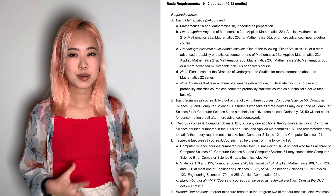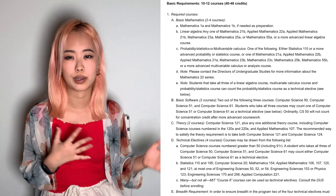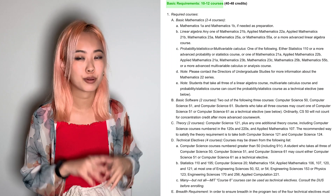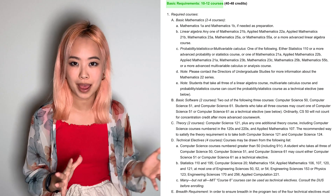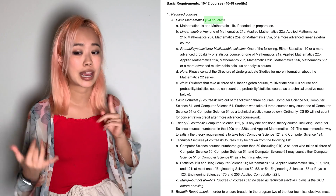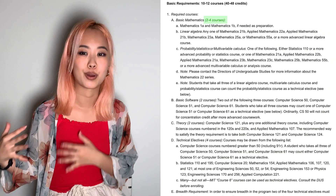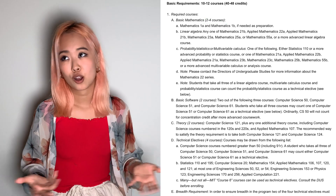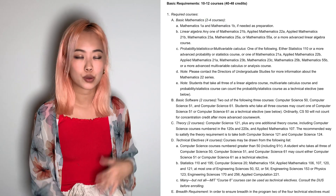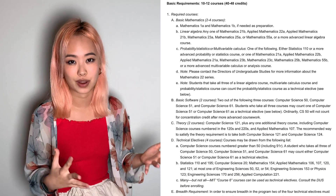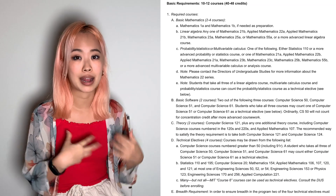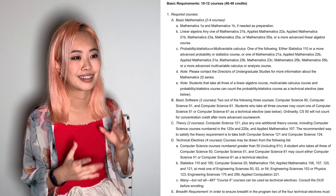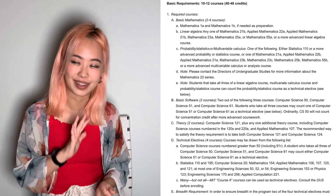The basic CS requirements are actually really short — only 10 to 12 classes depending on how much of a math background you came in with. The first section is basic math, which is two to four classes. You can take 1A or 1B if you want a ramp-up into math, otherwise you can go straight into multivariate calculus and linear algebra. A very common way is 21A and 21B, but there's a variety of ways to satisfy this requirement. For example, I took AM22 for linear algebra and STAT110 for calculus and probability.